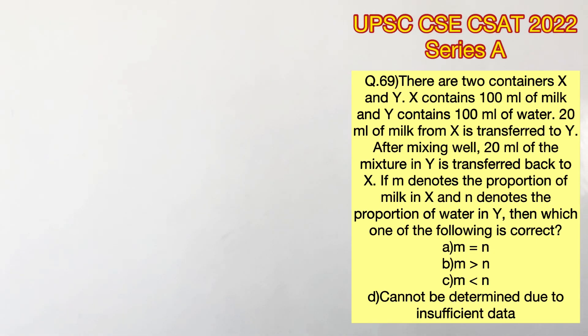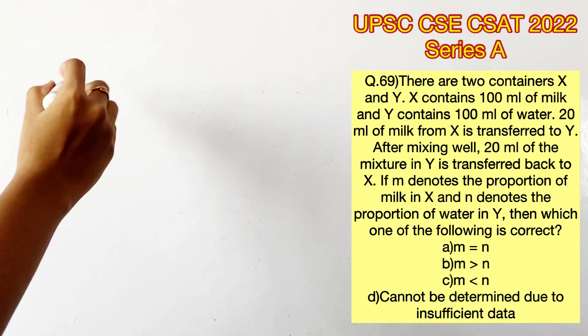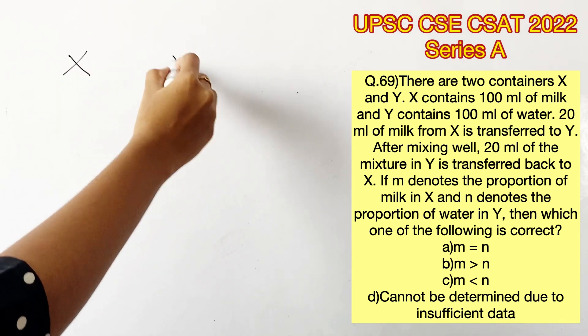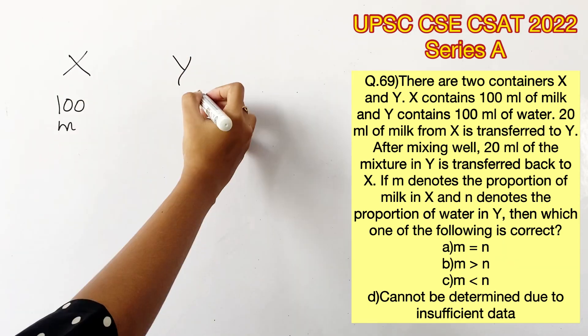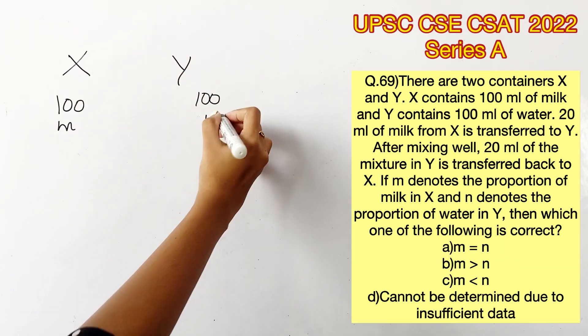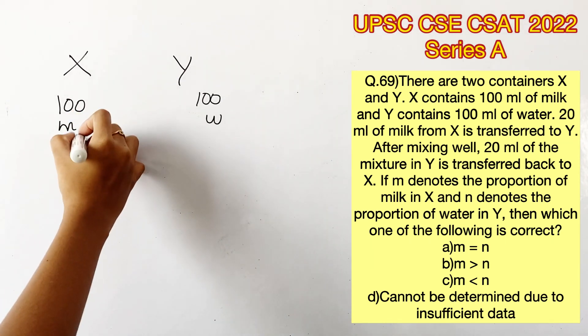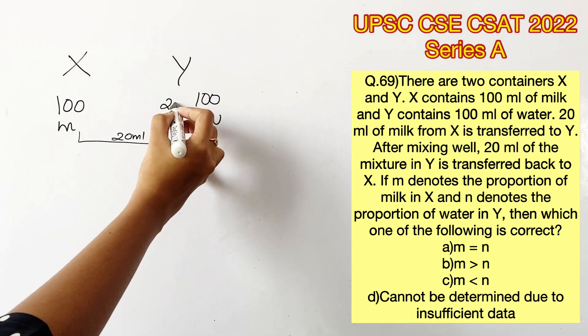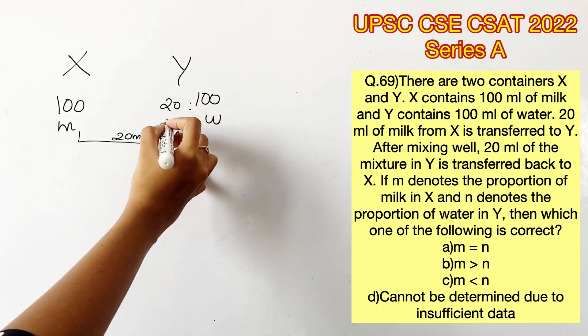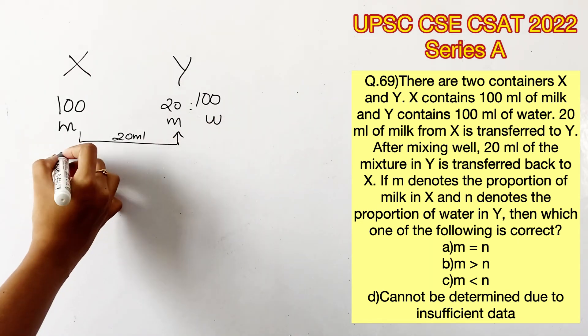Welcome to Aptitude Destination. Please pause the video and read the question completely. There are two containers X and Y. X contains 100 ml of milk and Y contains 100 ml of water. 20 ml of milk from X is transferred to Y, which means Y now has 20 ml of milk and 100 ml of water, while X will have 80 ml of milk alone.